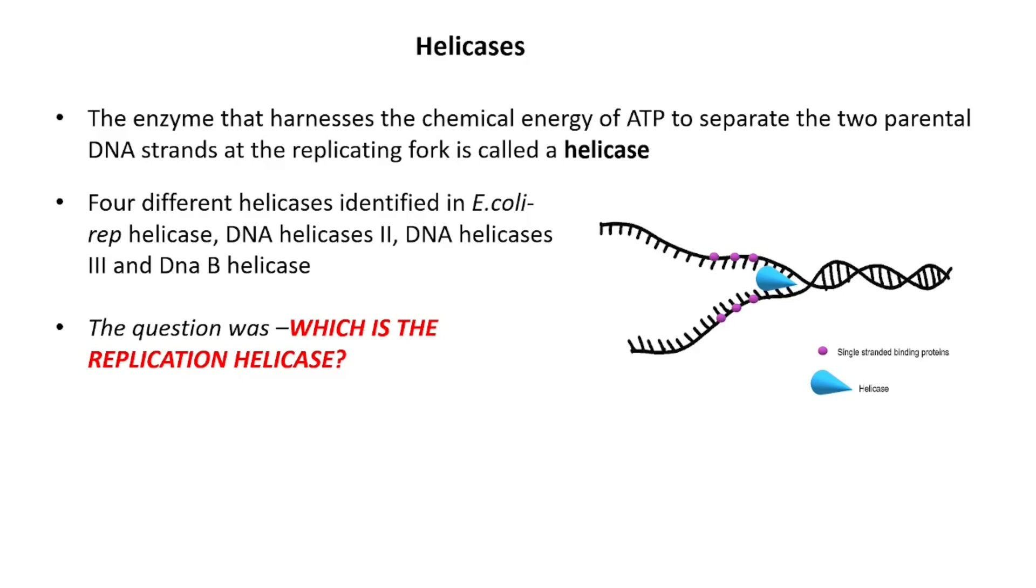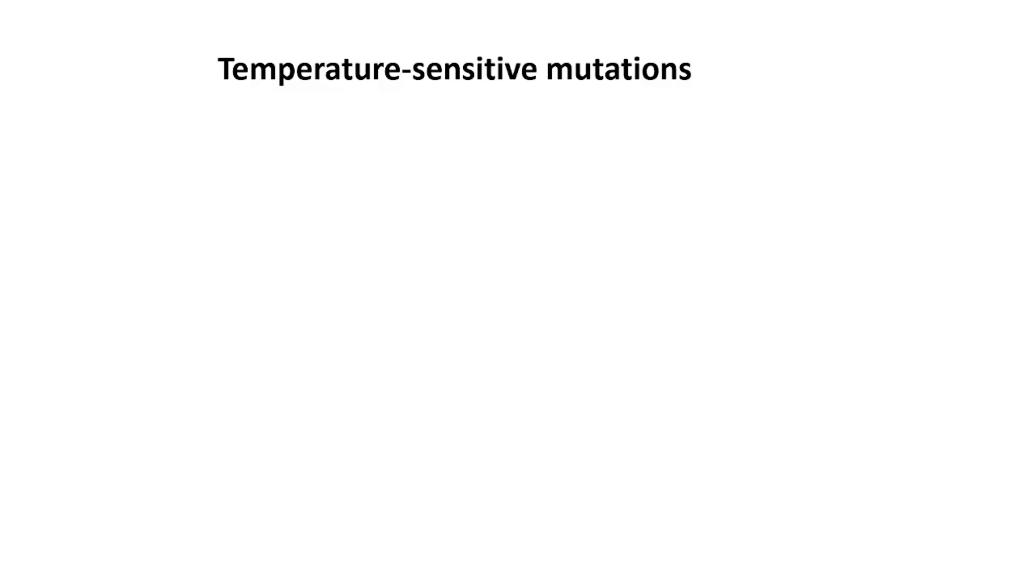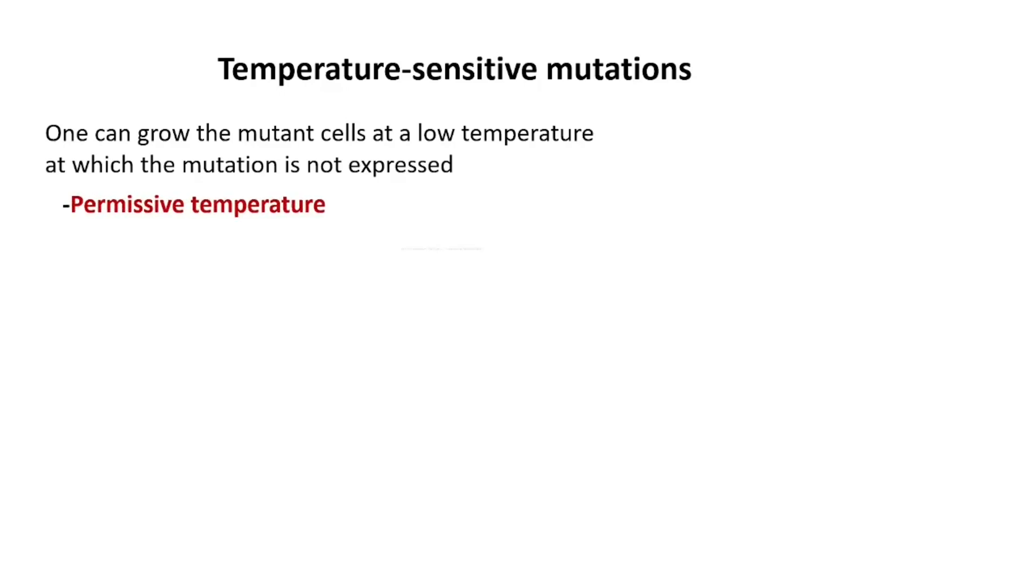We would anticipate that defects in the helicase that participates in DNA replication would be lethal. One way to generate mutants with defects in essential genes is to make the mutations conditional, particularly temperature-sensitive mutations. In temperature-sensitive mutants, one can grow the mutant cells at a low temperature at which the mutation is not expressed. This is called the permissive temperature. We can then raise the temperature so that the mutation is expressed and the mutant phenotype is expressed. This is called the non-permissive temperature.